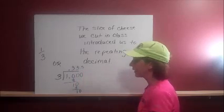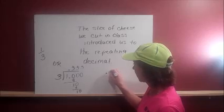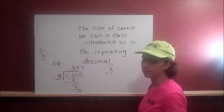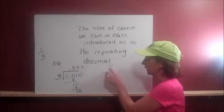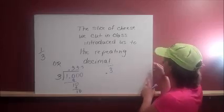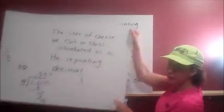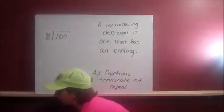This decimal would never end. So we would say that the quotient is 0.3 repeating. This line represents a number that repeats. It's only used on decimals, never whole numbers.